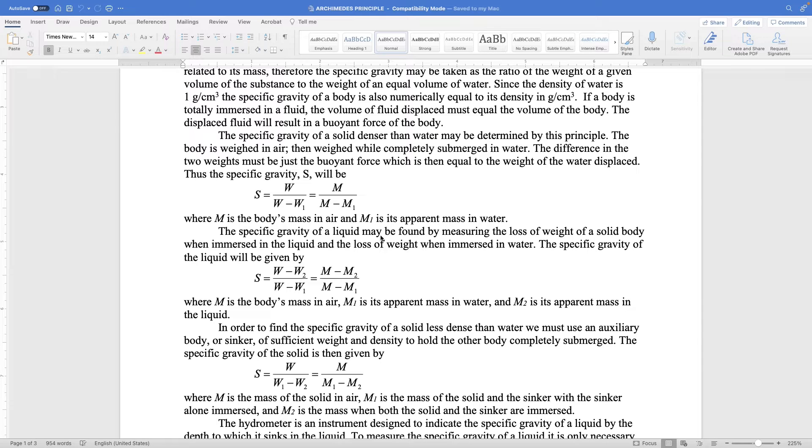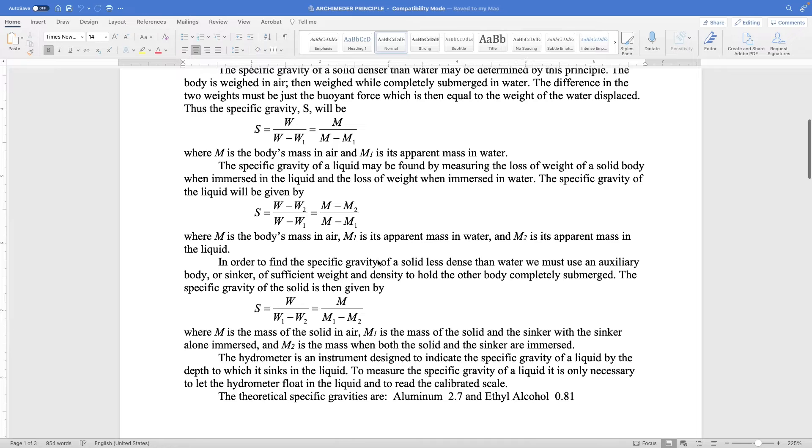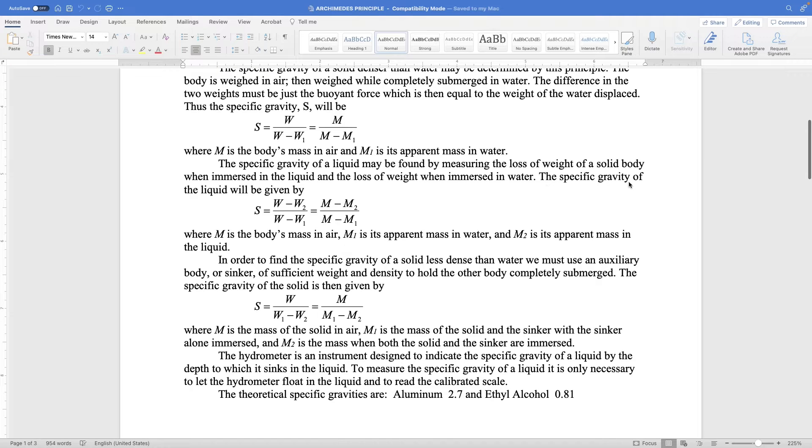So that's the two there. And then to find the specific gravity of alcohol, specific gravity of the liquid which is alcohol, it's m minus m2 divided by m minus m1. Again, m1 is the mass in water, m2 is the mass of the aluminum cylinder in alcohol, and m of course is the mass in air. So that's how you find the specific gravity of alcohol. It's all given here.